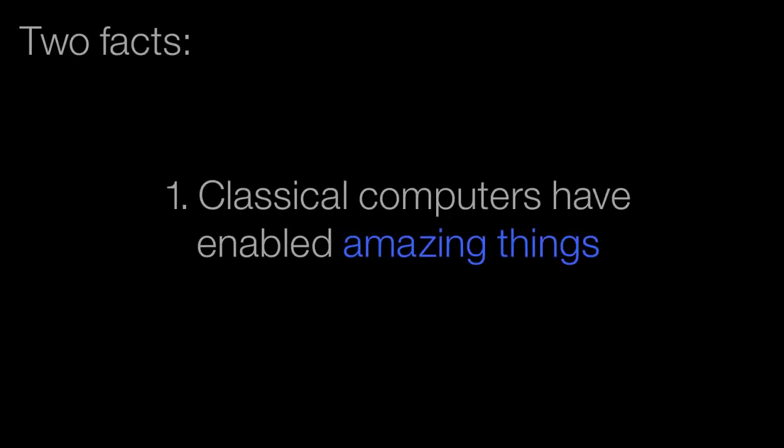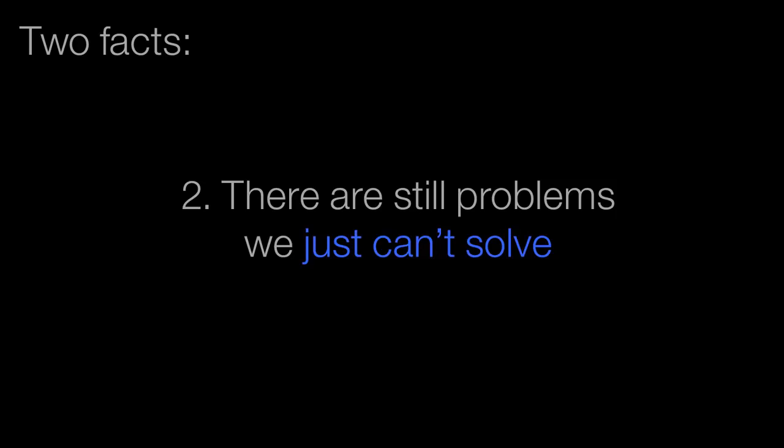I want to start with two facts. Fact number one: classical computers have enabled amazing things — the internet, flying across the country on a plane, the electronic giraffe outside blaring music. Classical computers have enabled just amazing things, but one of the things we don't often talk about is all the things they can't do. We talk about all this stuff they can do, but there's so many things they can't. So I want to start with two examples of things classical computers are really bad at. Maybe they can solve small versions of these types of problems, but by the time the problem gets big enough to be interesting, we just run out of computing horsepower.